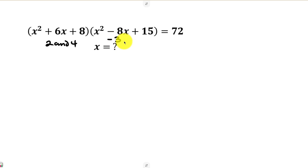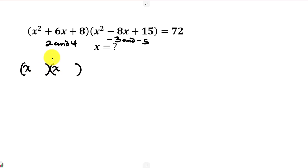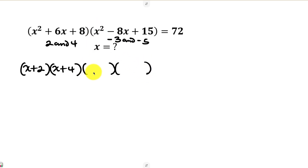Now let's factorize. For the first one, we bring out two brackets: to get x squared we have x times x, and the factors are plus 2 and plus 4. For the second one, we also multiply two brackets: x times x gives x squared, and the factors are negative 3 and negative 5. This product is equal to 72.